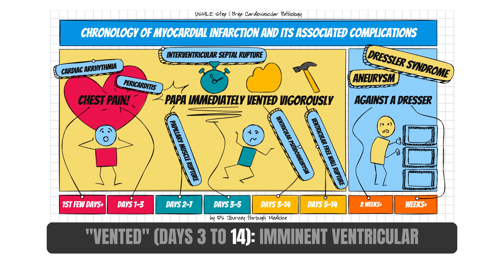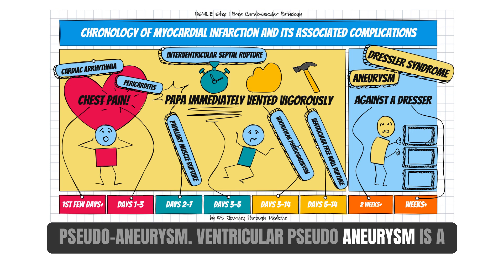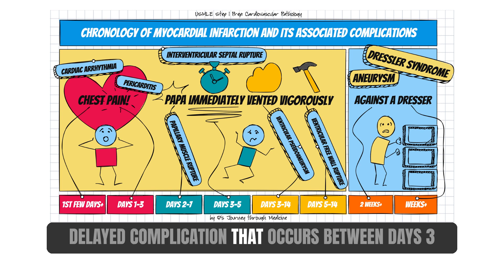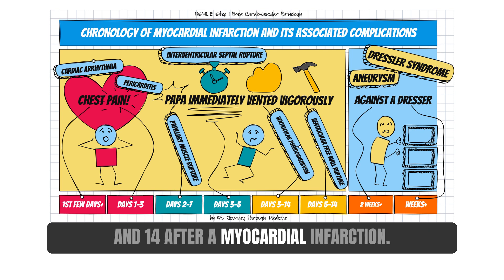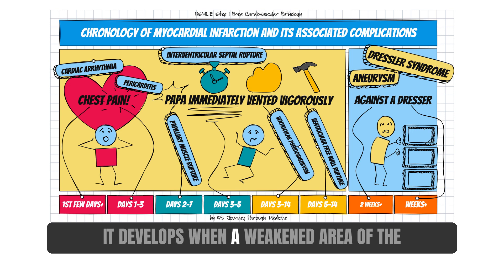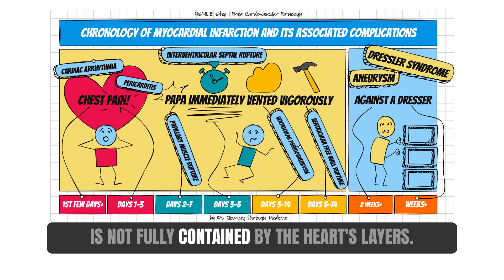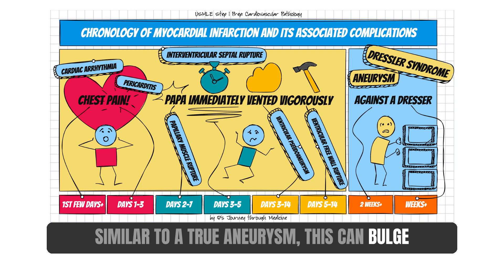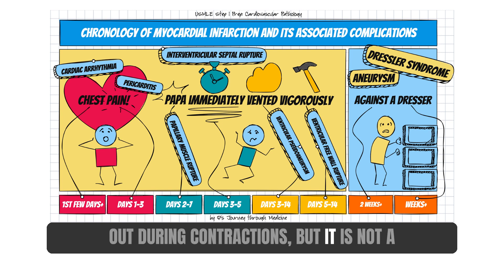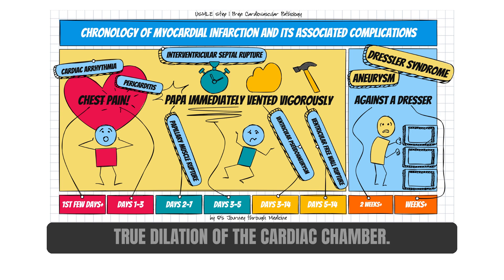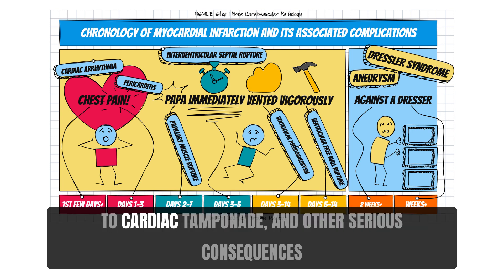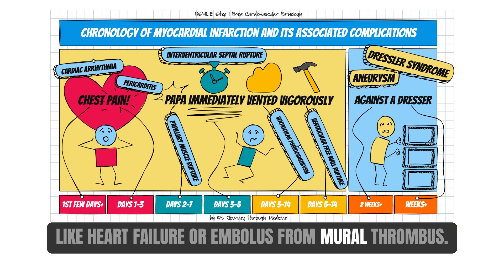Vented — days 3 to 14 — ventricular pseudoaneurysm. Ventricular pseudoaneurysm is a delayed complication that develops when a weakened area of the heart's wall becomes encapsulated by scar tissue but is not fully contained by the heart's layers. Similar to a true aneurysm, this can bulge out during contractions, but it is not a true dilation of the cardiac chamber. The risk of rupture exists, which can lead to cardiac tamponade, heart failure, or embolus from mural thrombus.